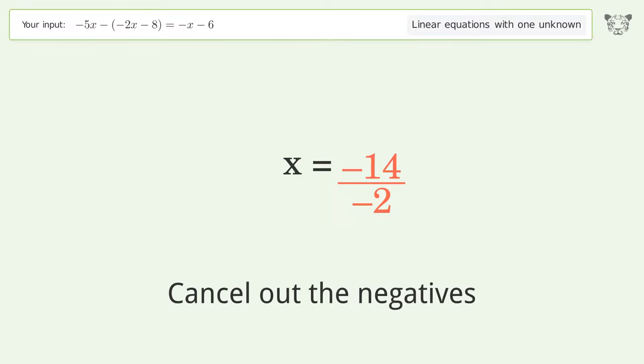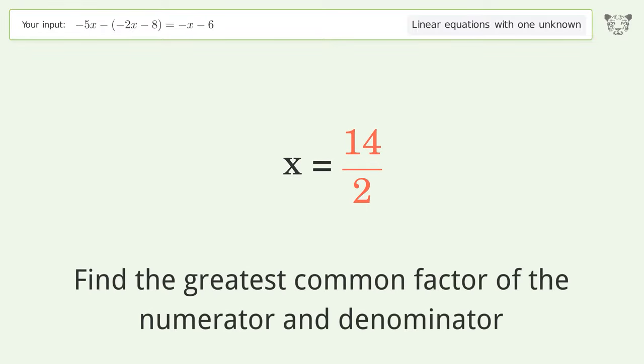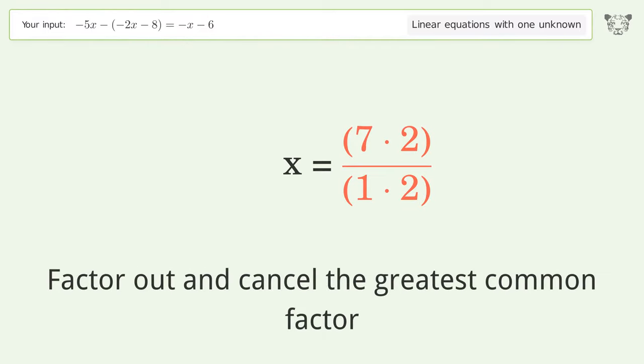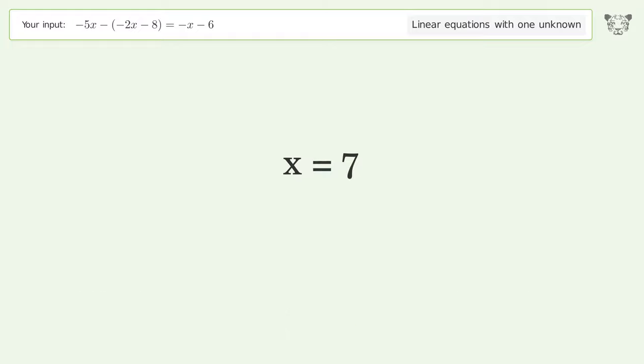Cancel out the negatives. Find the greatest common factor of the numerator and denominator. Factor out and cancel the greatest common factor. And so the final result is x equals 7.